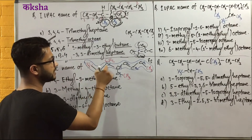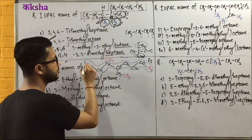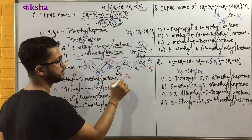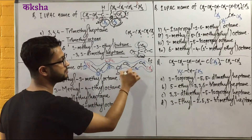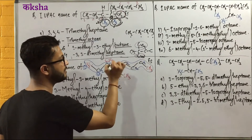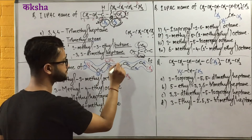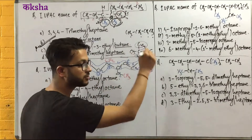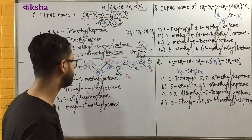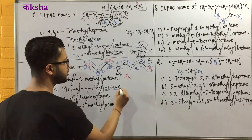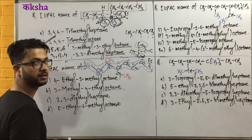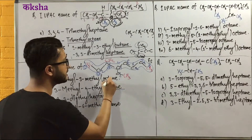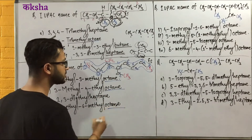Now we need a branch: 1, 2, 3 — 1, 2, 3, 4, 5 — 1, 2, 3, 4, 5, 6, 7, 8. What is this? Octane. Carbon and carbon are double. So this is the octane, this is the octane.